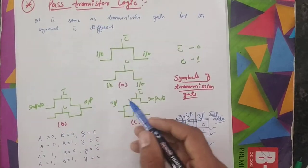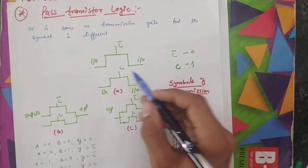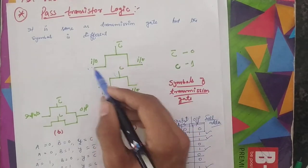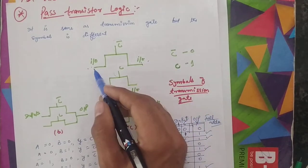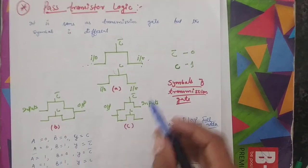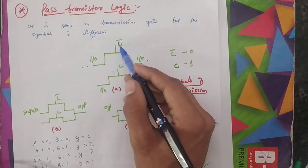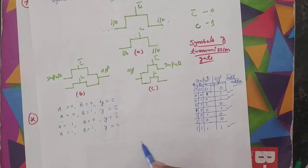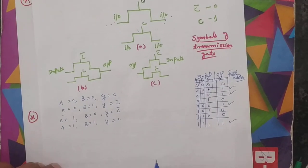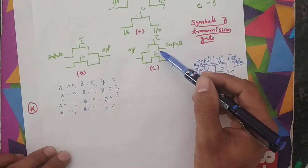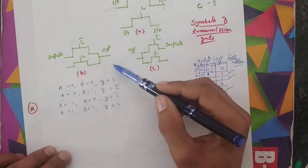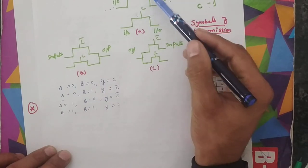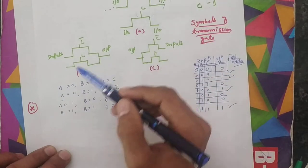In pass transistor logic, these are the control signals and these are the input and output. If you apply input here you take output from here, or if you give input here you take the output from there. When the complement is applied, that value is 0; when the complement is not applied, that value is 1. This has both P-type and N-type, and when you combine both, you get the combined symbol.